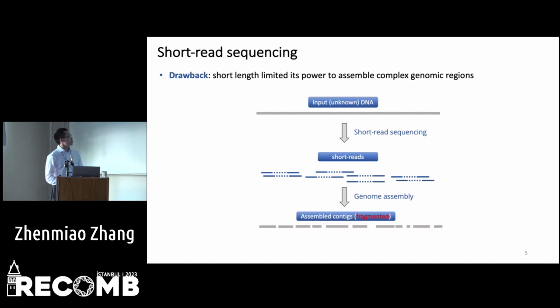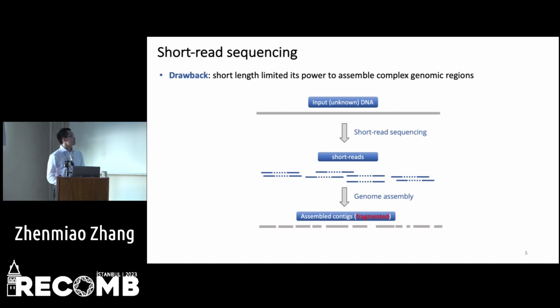Sequencing will produce a large amount of reads that cover the input DNA with sufficient coverage for the genomic assembly step. But short-read sequencing has a major drawback: the short length of the reads limits its power to assemble complex genomic regions such as repeat regions.